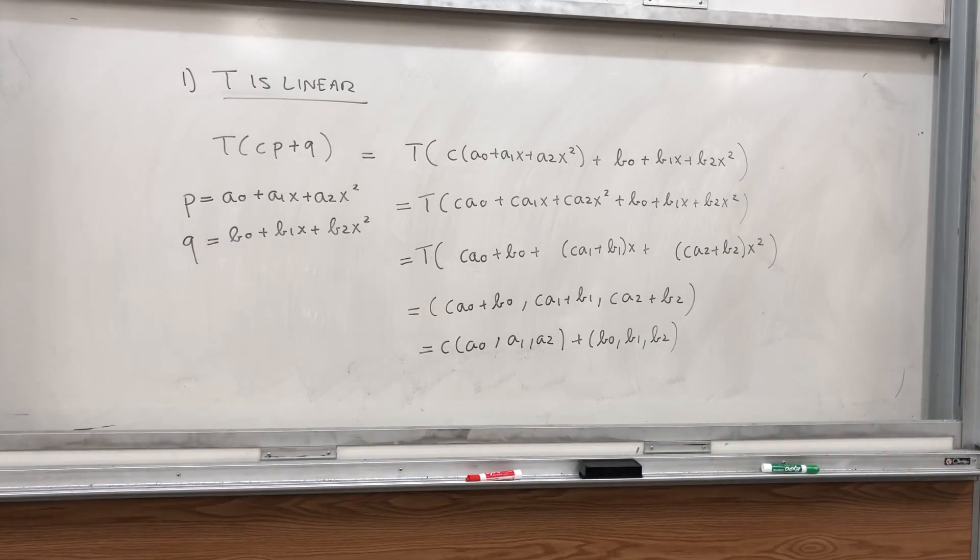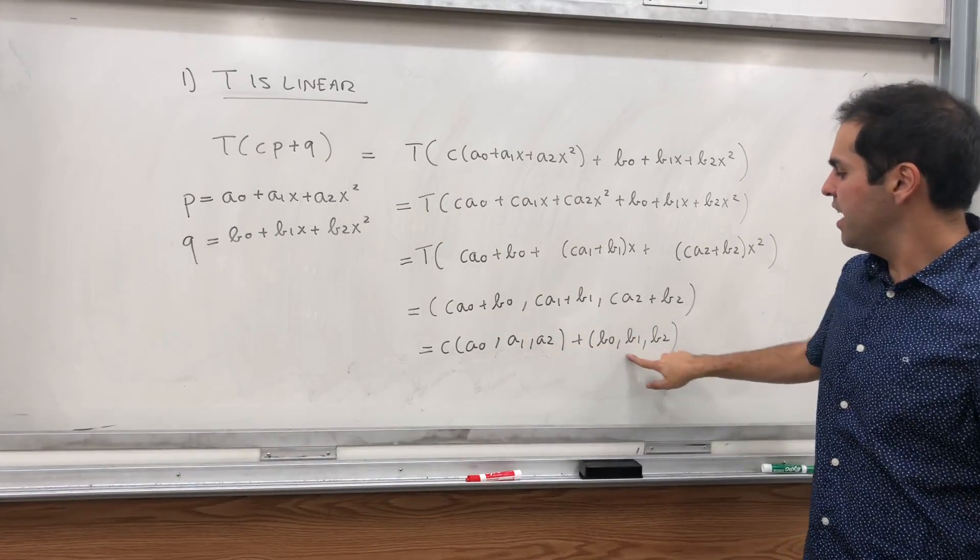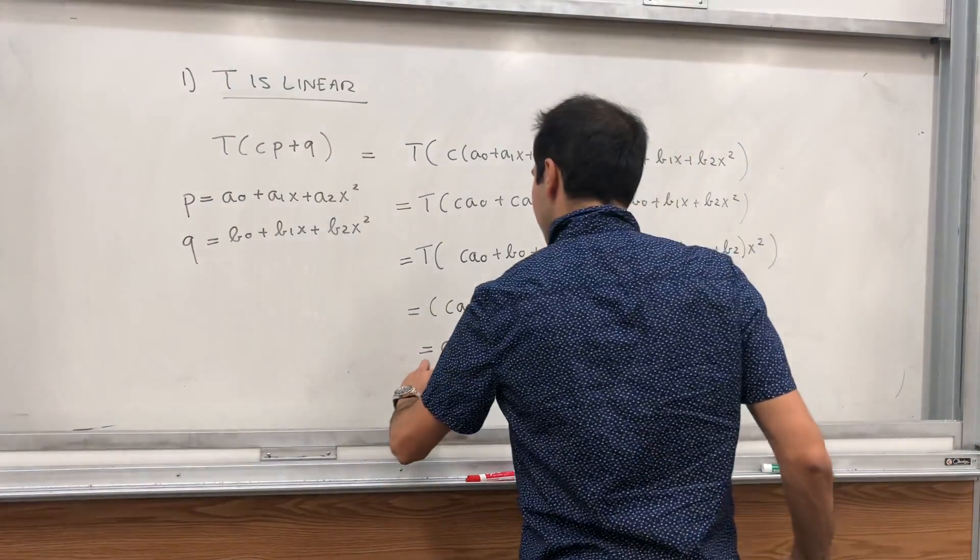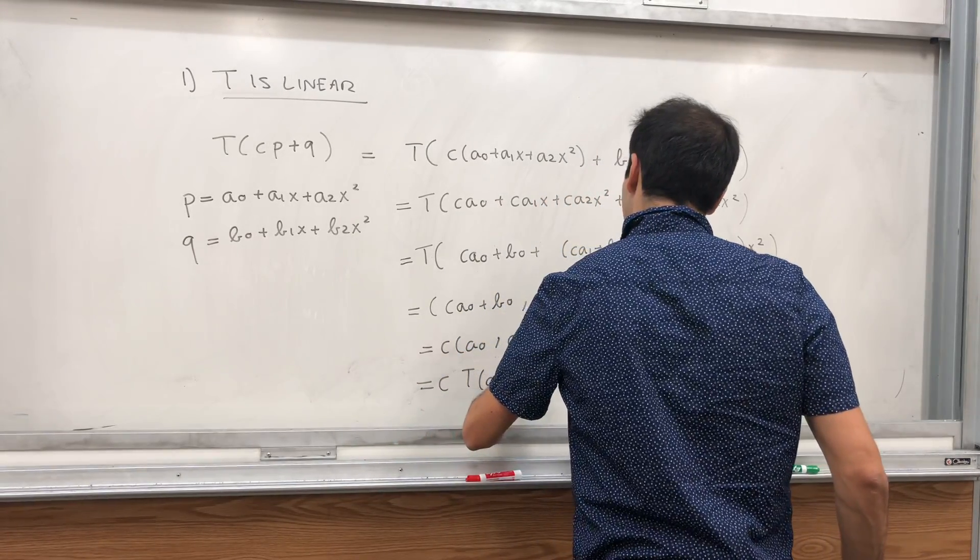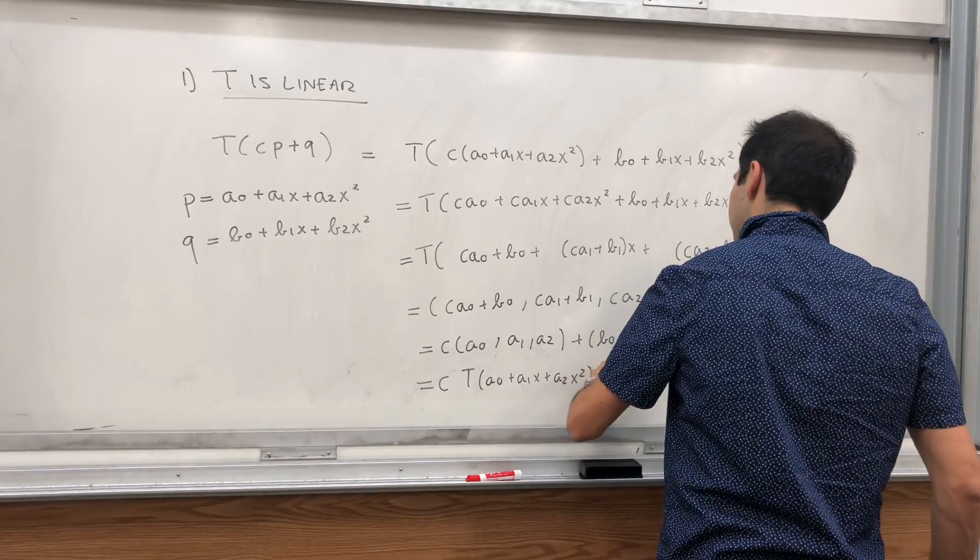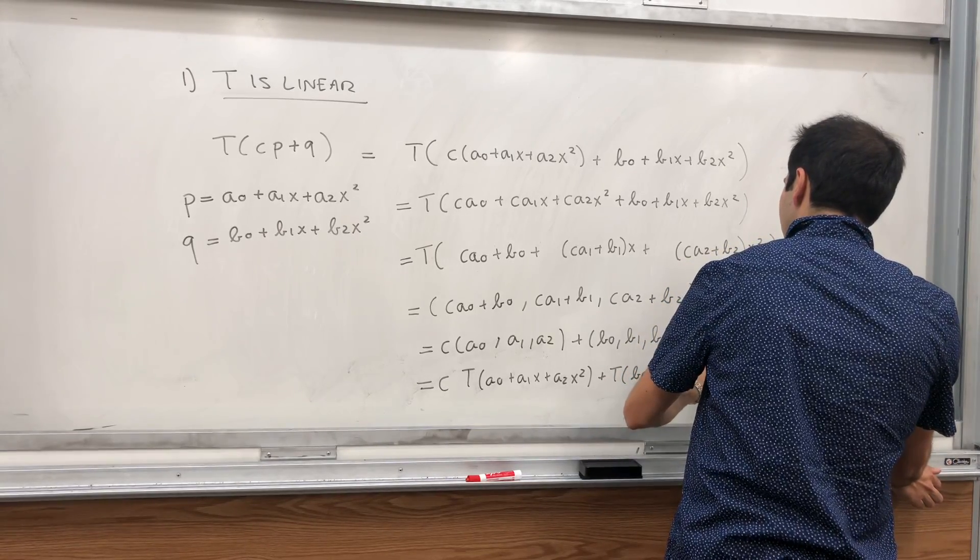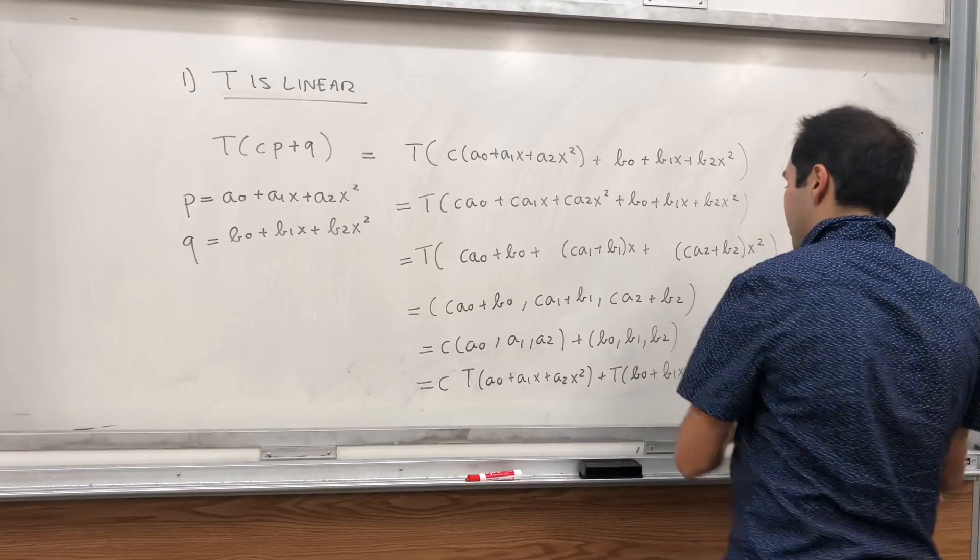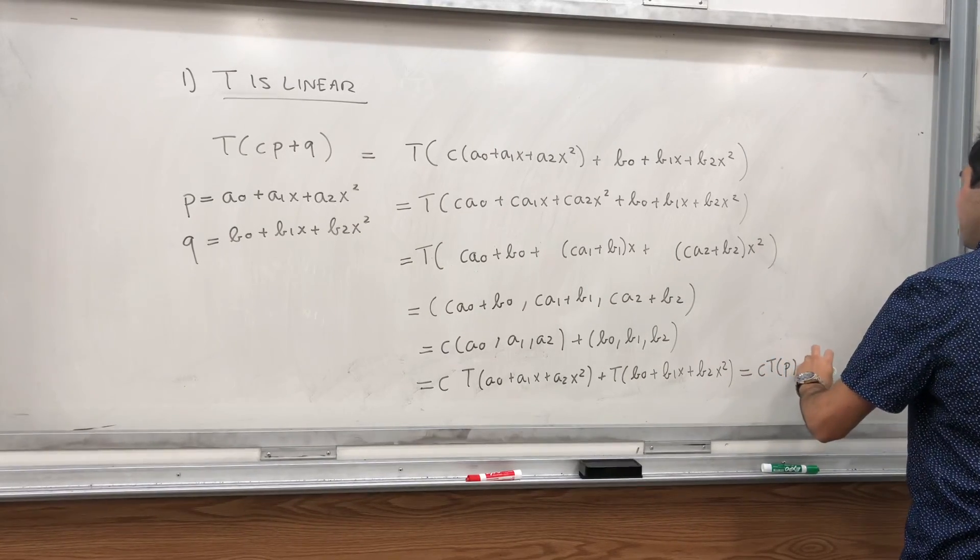Why did I do this? Because this is precisely T of P and T of Q. So this is C T of (a0 plus a1x plus a2x squared) plus T of (b0 plus b1x plus b2x squared). And that's CTP plus TQ.